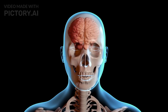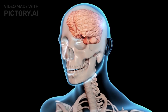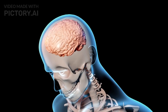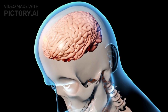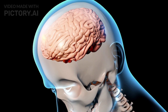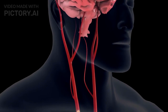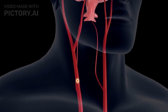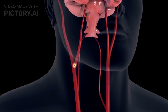Protected by the skull, the brain is cushioned by cerebrospinal fluid, which acts as a buffer against mechanical shocks. This fluid also provides buoyancy, preventing the brain's weight from cutting off its own blood supply.